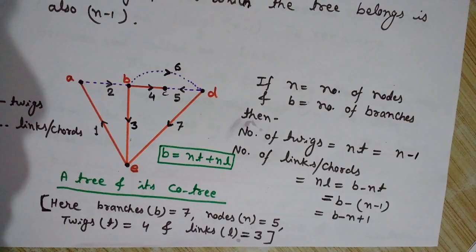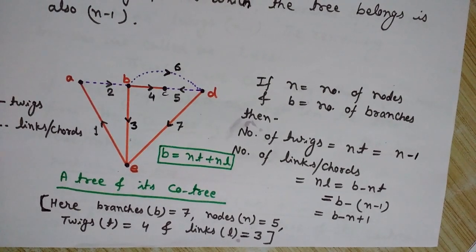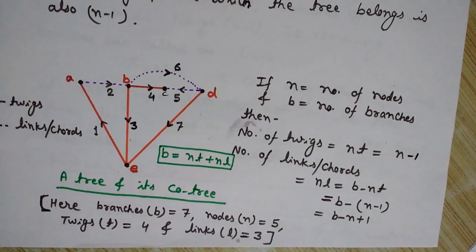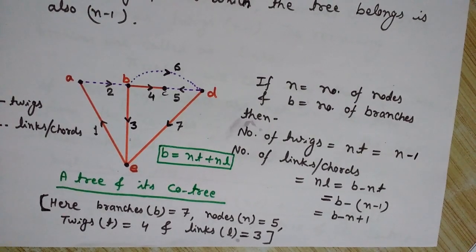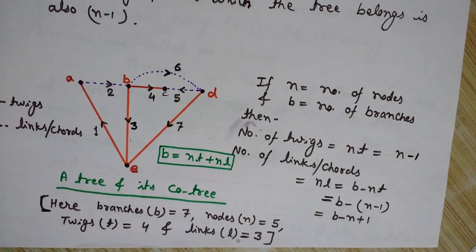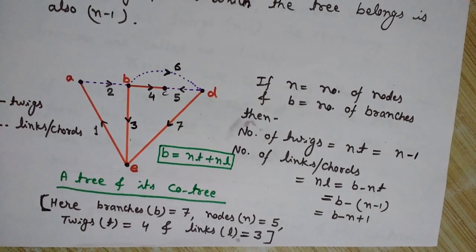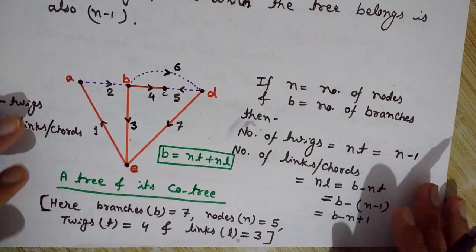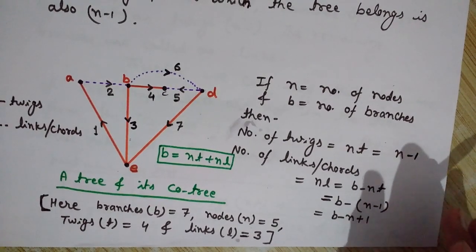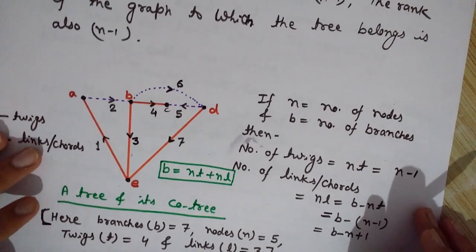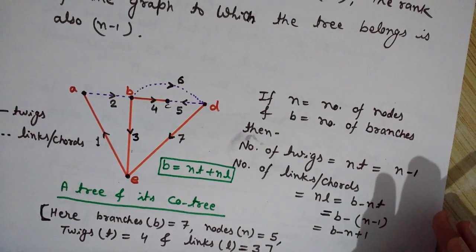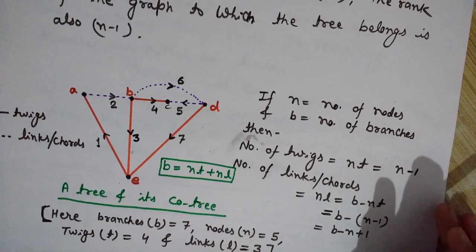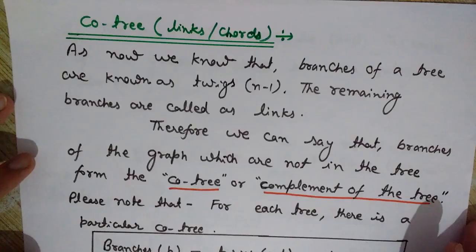The third property is that every connected graph has at least one tree. While a graph can have multiple trees, at least one tree will always exist for every connected graph. The fourth property is that the rank of a tree is n minus 1, and the rank of the graph to which the tree belongs is also n minus 1, where n is the number of nodes.